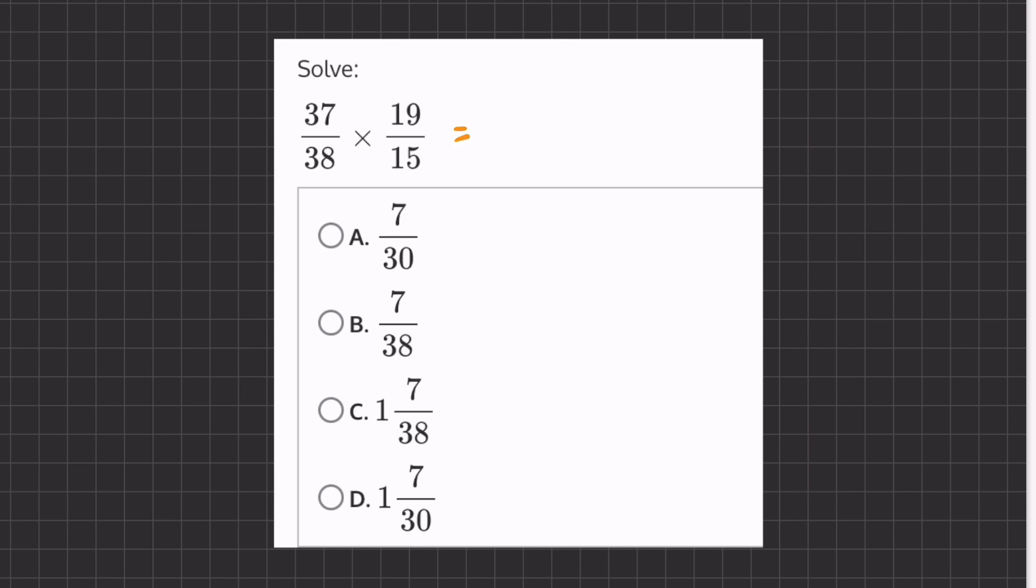So, if we use this commutative property, we can take this 38 and 15, the two denominators, and switch them. Now, let's see why this can help us. We have 37 over 15, after we switched, times 19 over 38.